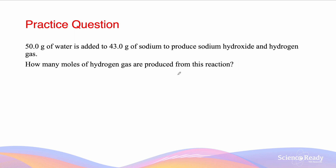We can identify that this is a limiting reagent type question because we are given two limited quantities of reactant. This means that we will need to work out the stoichiometric ratio of the reactants, and work out which of the reactants does not have enough mass to complete this reaction.